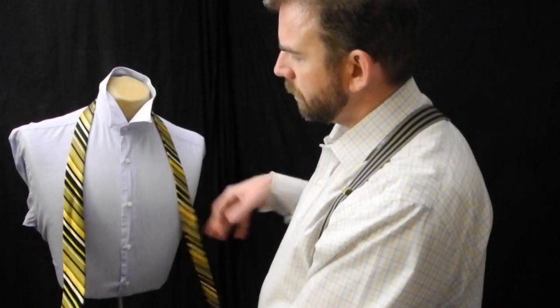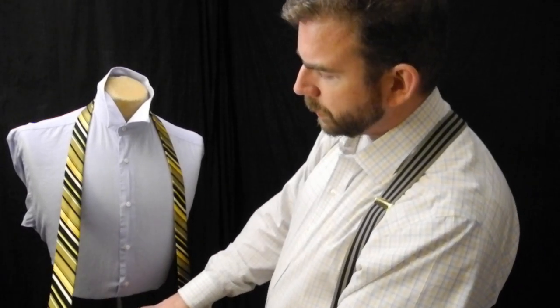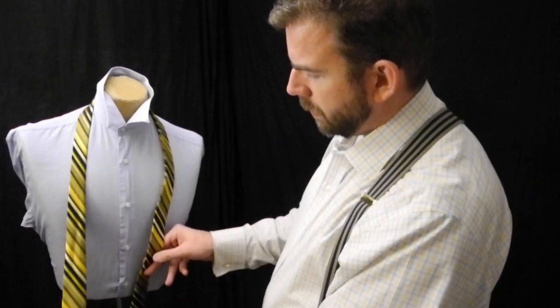So, average length tie. Counting the buttons on the torso - one, two, three, four, five - and having tied this before, I know the proper length would be at the sixth button.